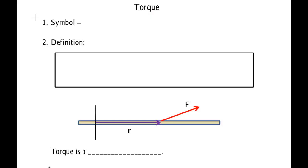In this video we will consider torque, the rotational analog of force. The symbol for torque is the Greek letter tau, which looks like a T, and it is a vector.